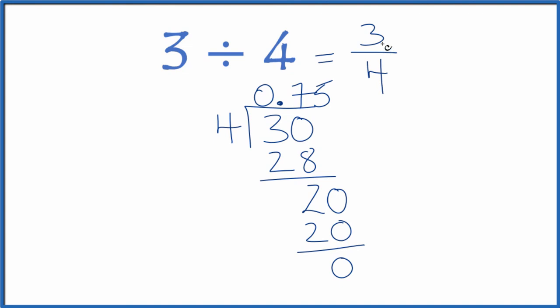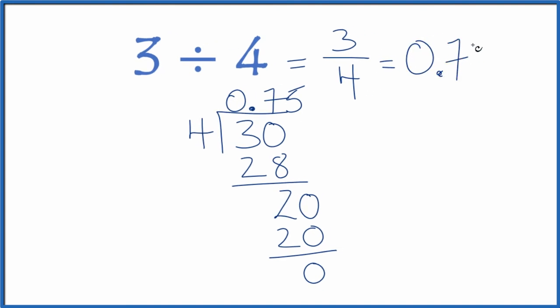So we can also write 3 fourths as the decimal 0.75. If you divide 3 by 4 in a calculator, you're going to get 0.75. These are equal. So that's how you divide 3 by 4. You get 3 fourths, or the decimal 0.75.